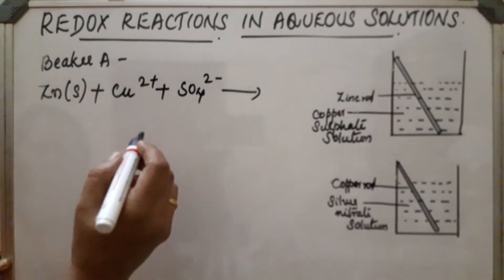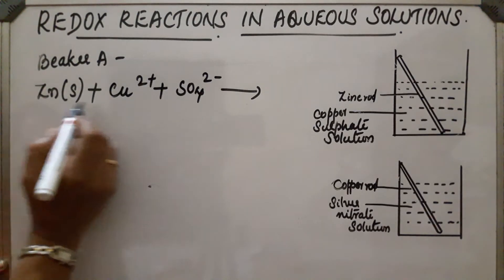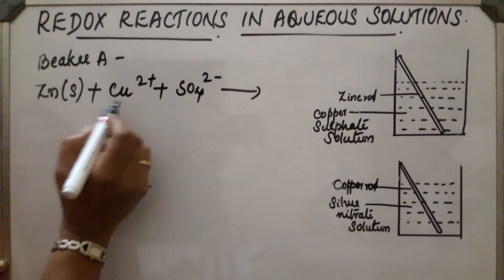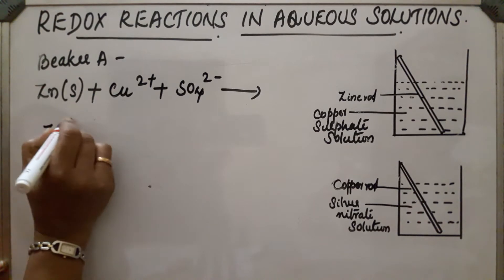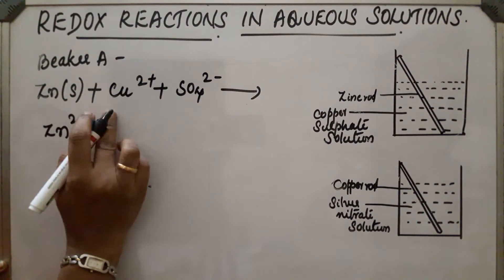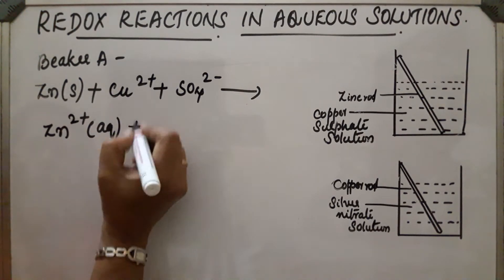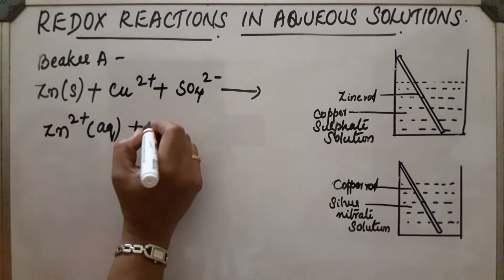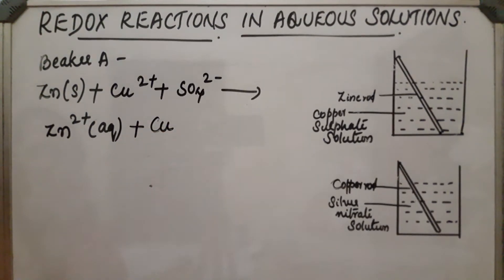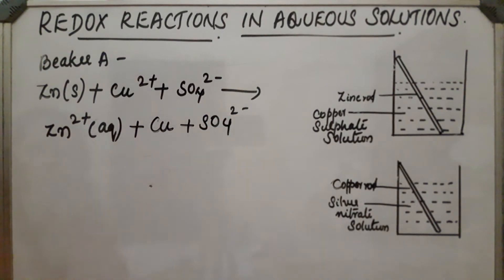Zinc has more electron releasing power than copper, so it releases two electrons and acts as a reducing agent. It gets oxidized to Zn²⁺ and moves into the solution. Copper acts as an oxidizing agent, gains those electrons, gets converted into metallic copper, and gets deposited on the zinc rod. Sulfate ion does not take part in the reaction.